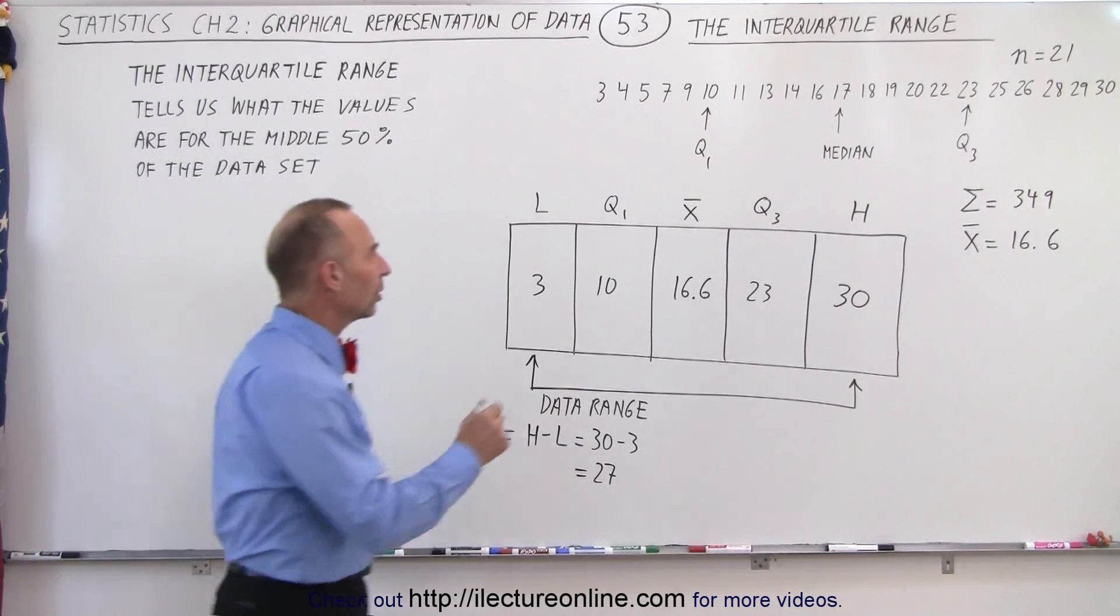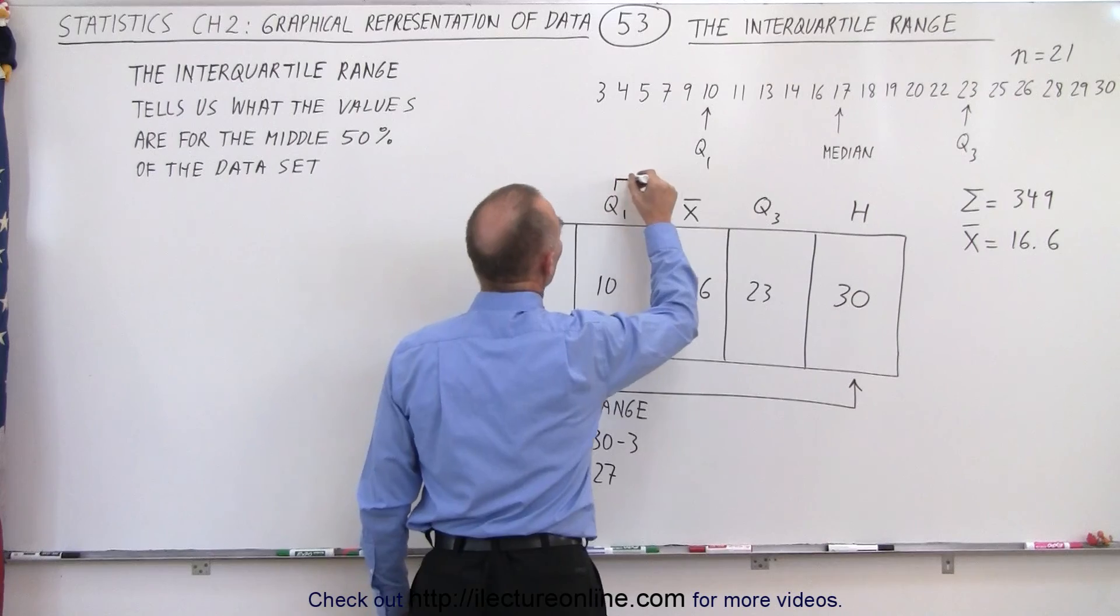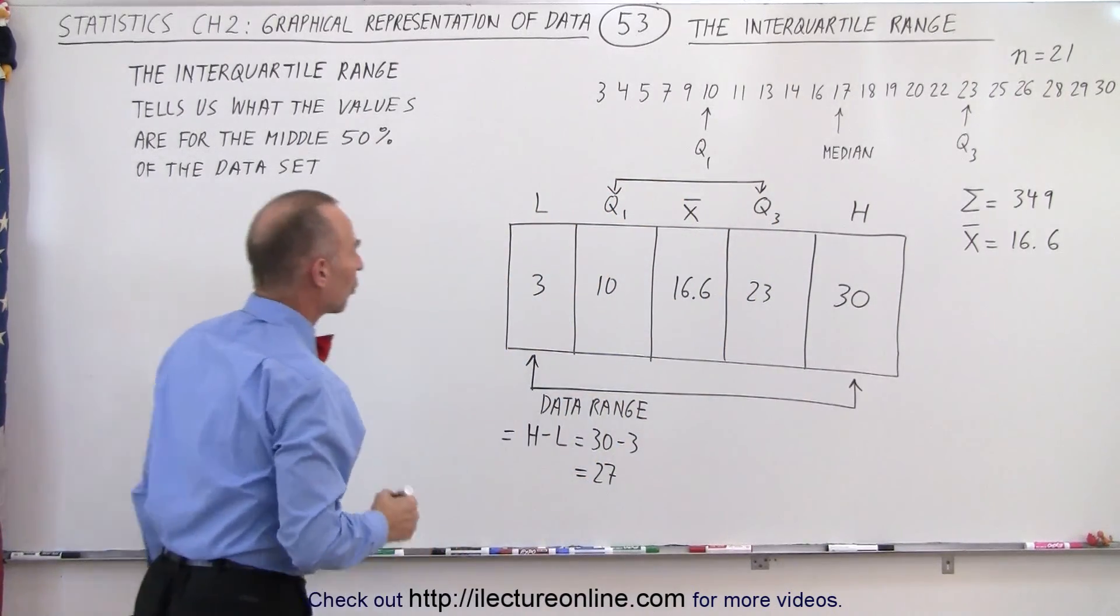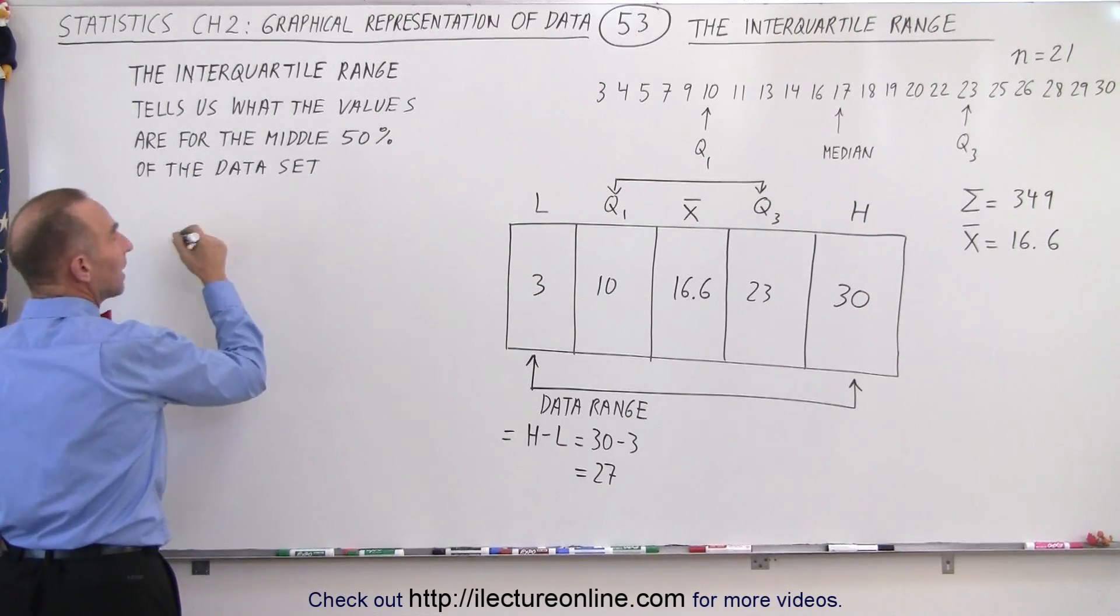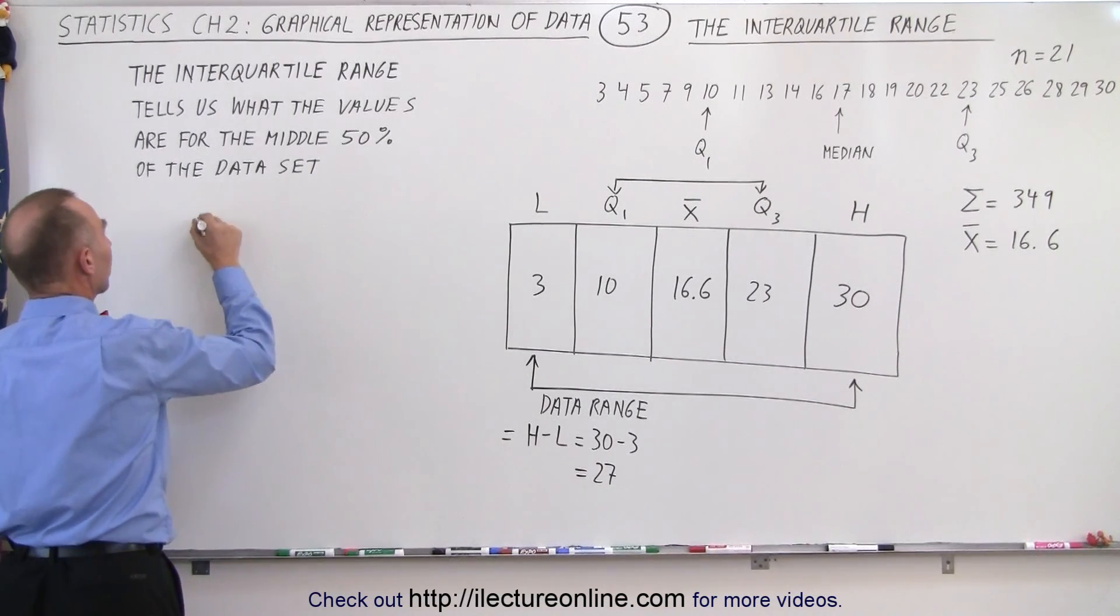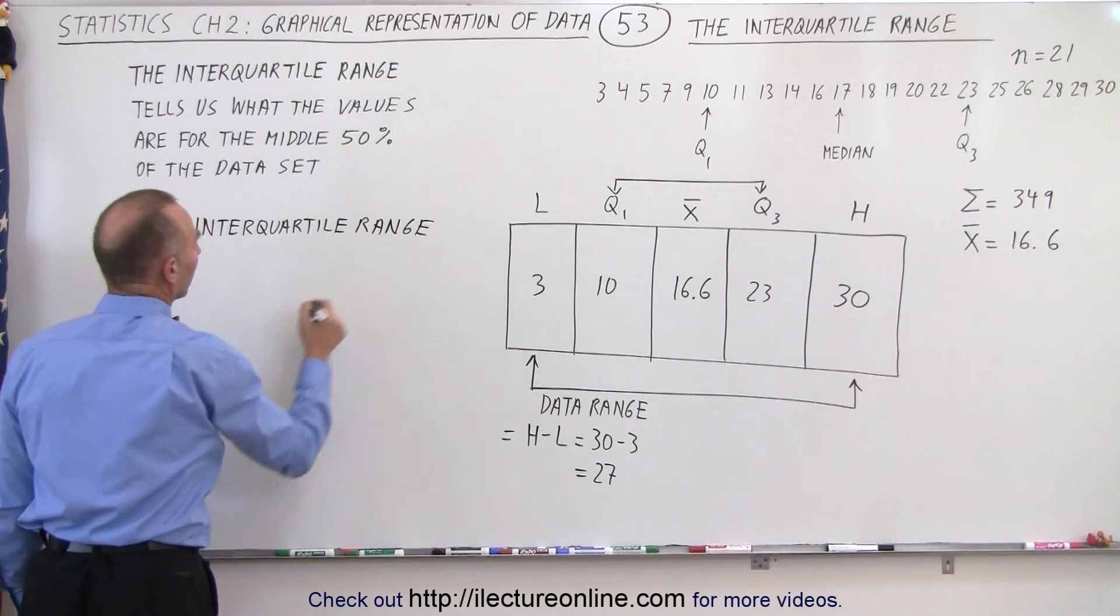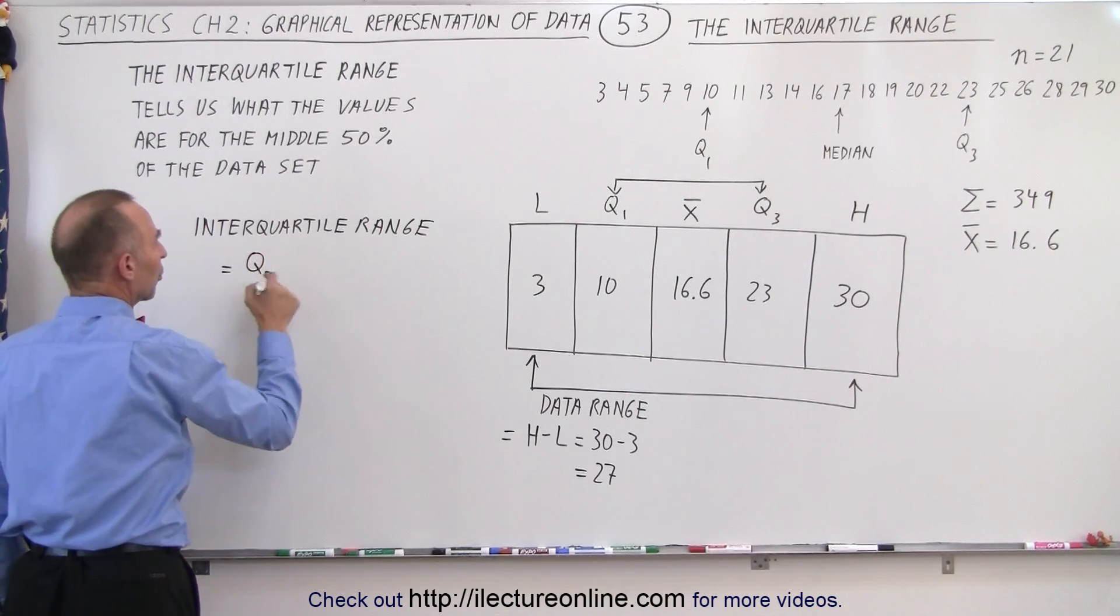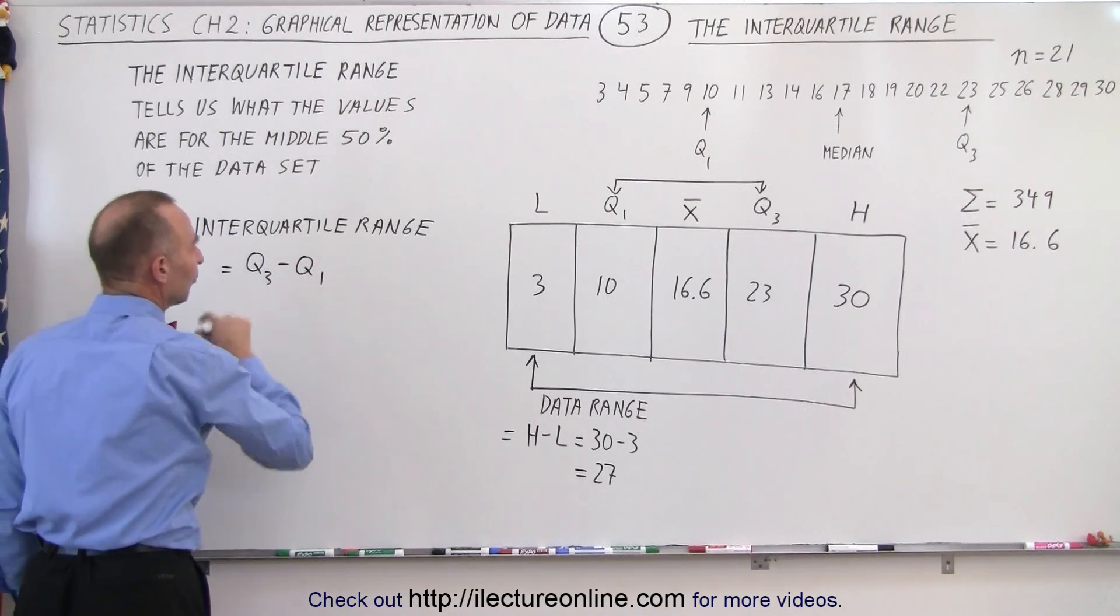But the interquartile range is the range between the value of the first quartile and the value of the third quartile, which means that the interquartile range is simply equal to the difference between the value for the third quartile minus the value for the first quartile.